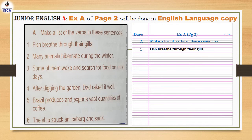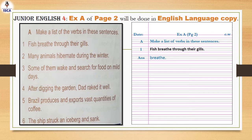Write down question number 1, which is: Fish breathe through their gills. That means fish apni gills ke through saans leti hain. Breathe means saans lena. You have to identify the verb in this sentence, and the answer is: breathe. Fish are performing an action, that is breathe. So breathe is the verb.